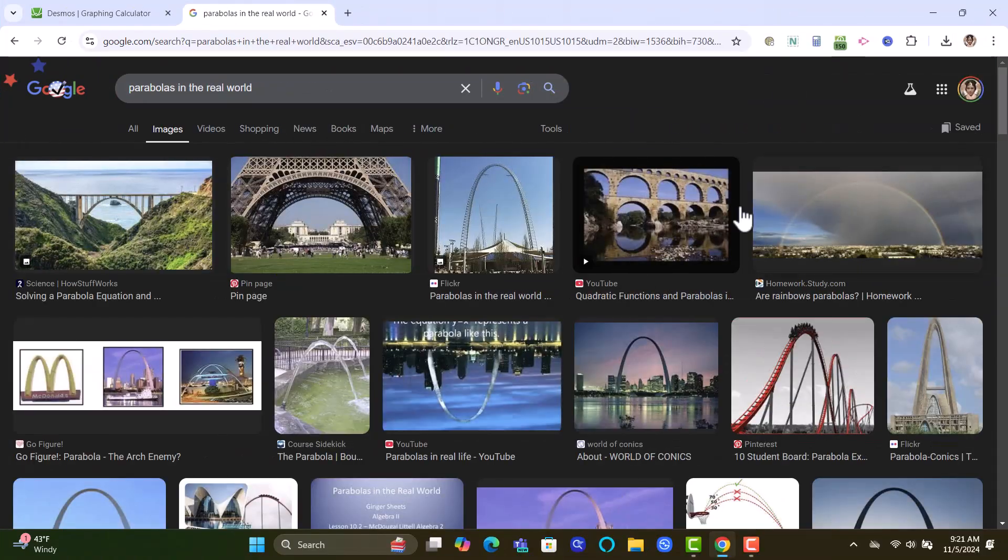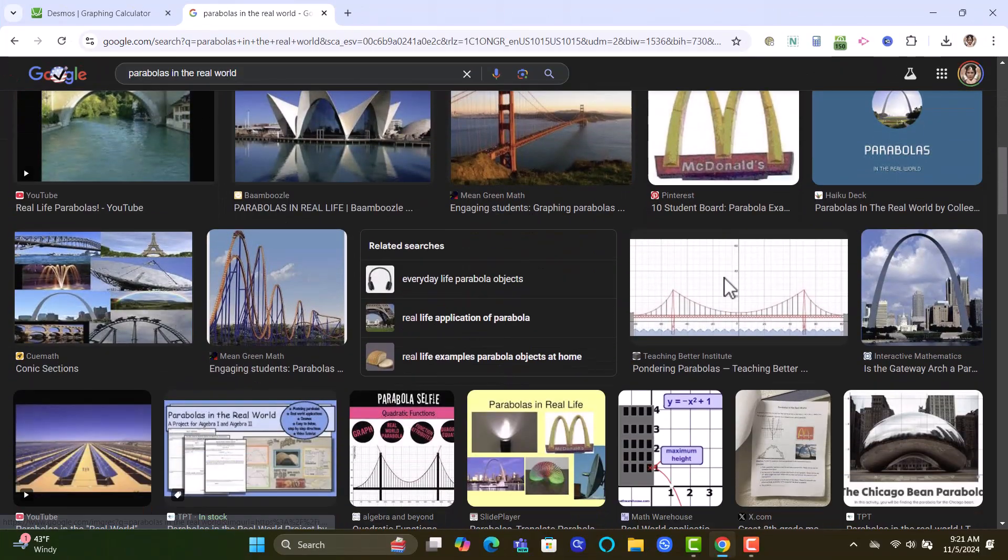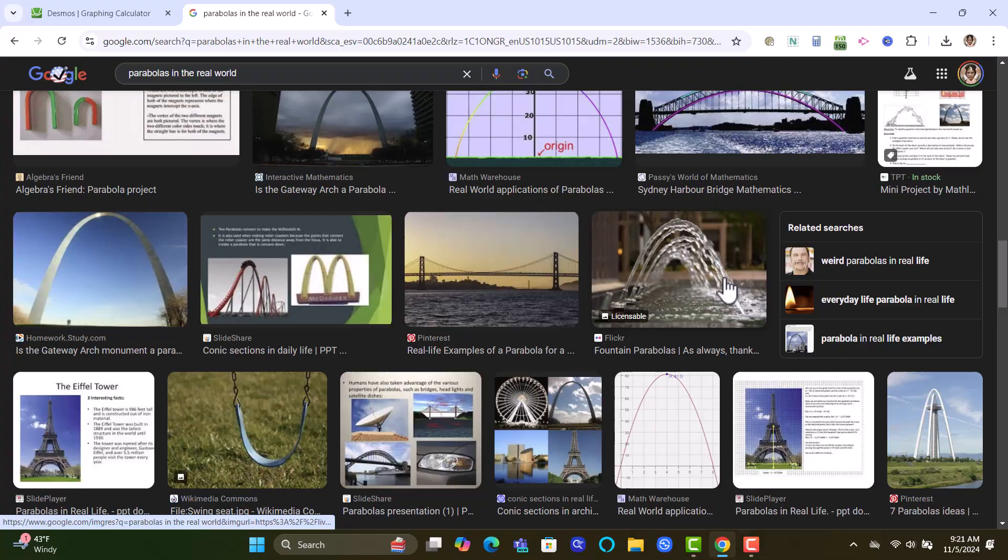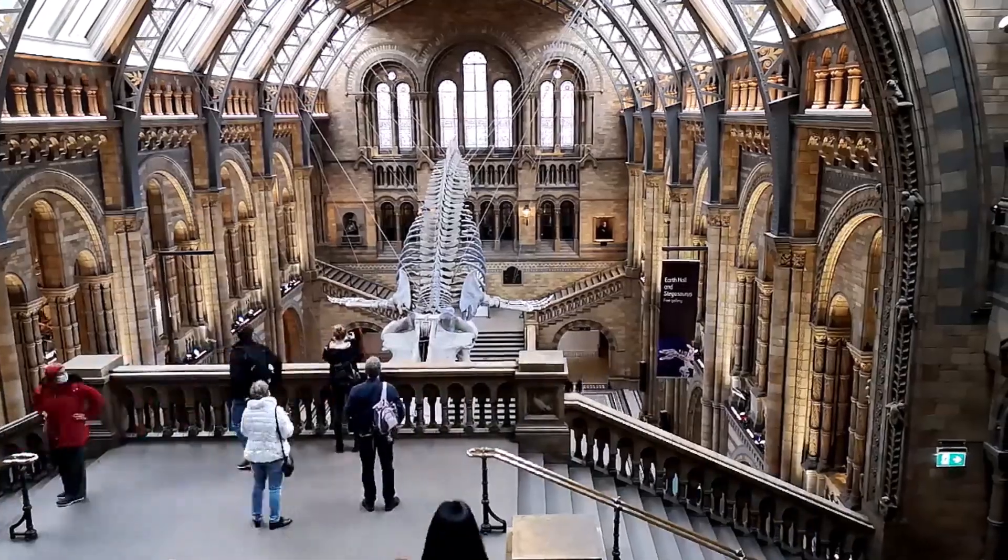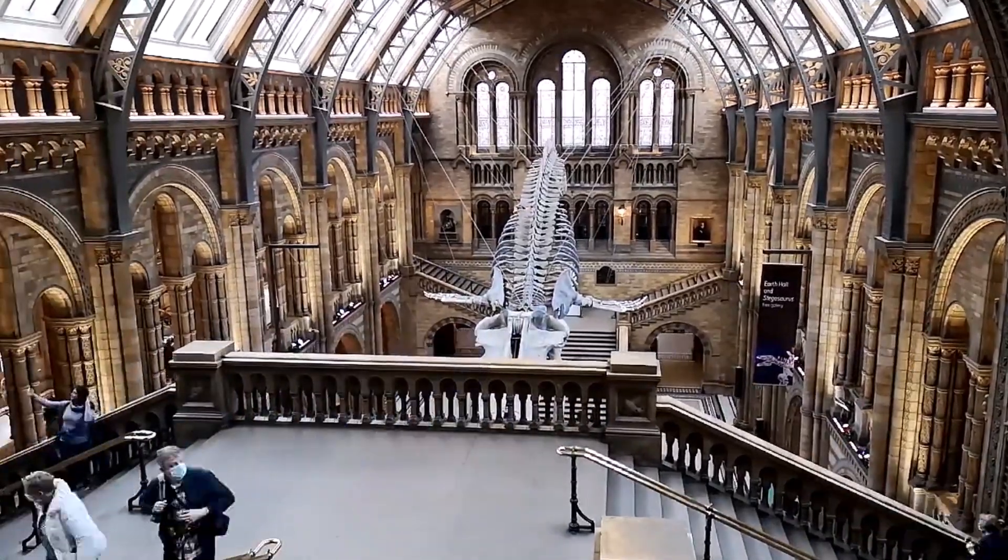To find the equation of a parabola using an image, the very first thing that you want to do is to find an image. Now you can either do this on the internet, but if this was a project I was doing in my class, I would have my students go out and take their own photo.